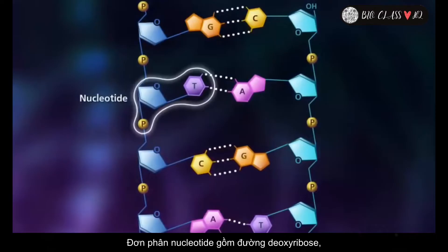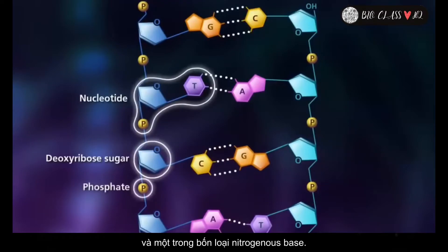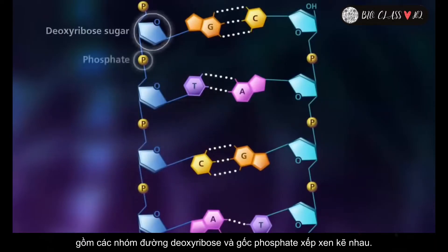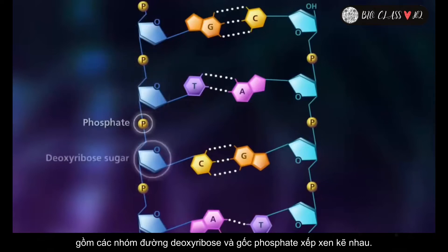Nucleotides are molecules that consist of a deoxyribose sugar, a phosphate, and one of four nitrogenous bases. The phosphodiester backbones consist of alternating sugar and phosphate groups.